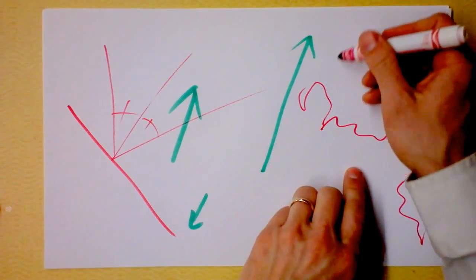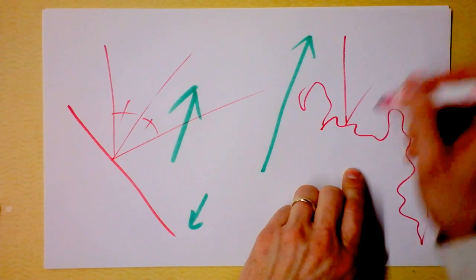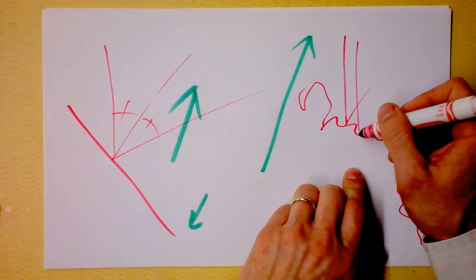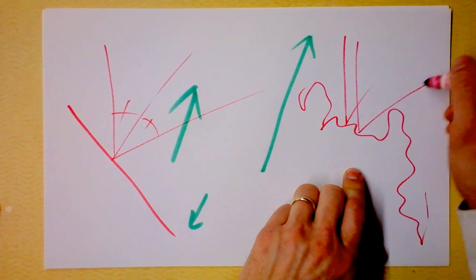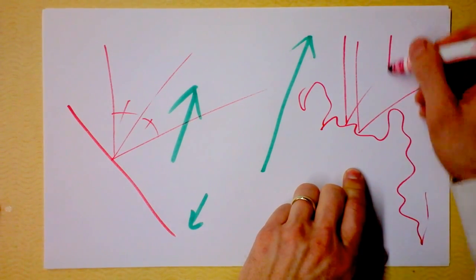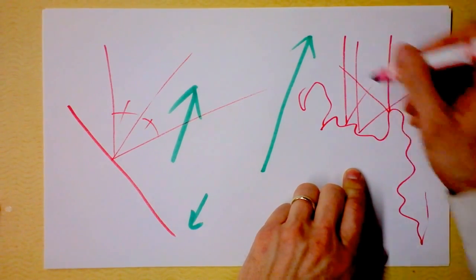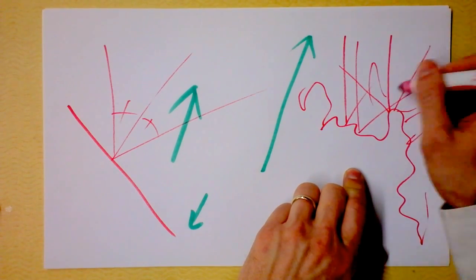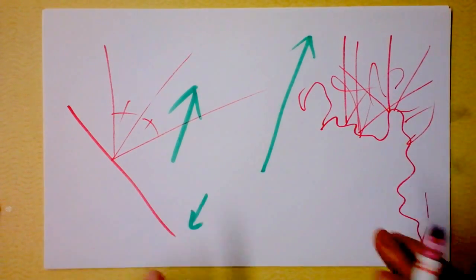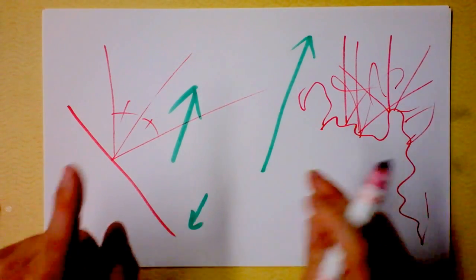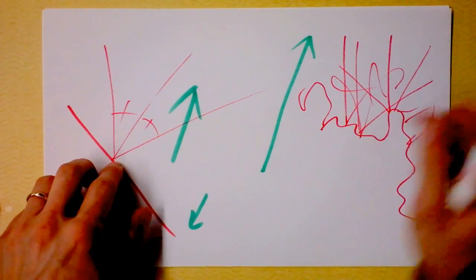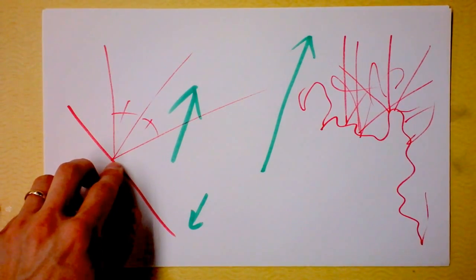The surface of a mirror is smooth, so every ray that comes in goes out at the same angle. But for a diffuse reflector, a ray coming in might go in any direction. This is a diffuse reflector because light's coming out in every possible direction. But we're going to be studying only the four principal rays we discussed: the P ray, the F ray, the C ray, and the M ray.